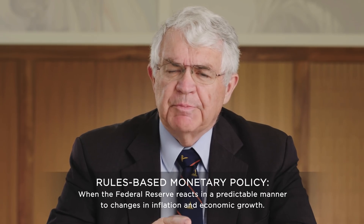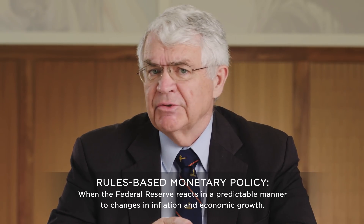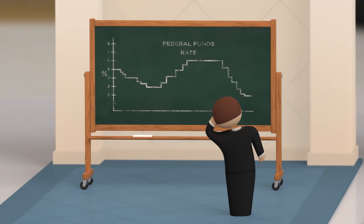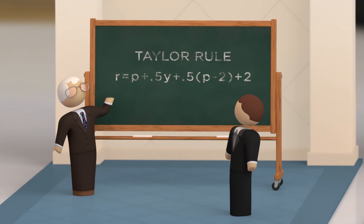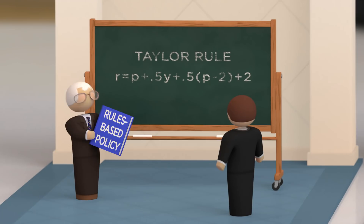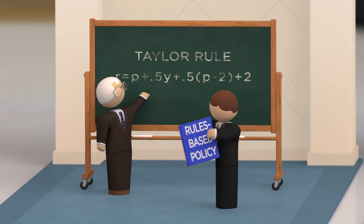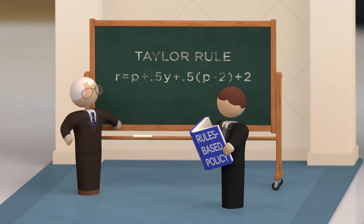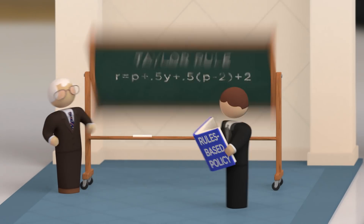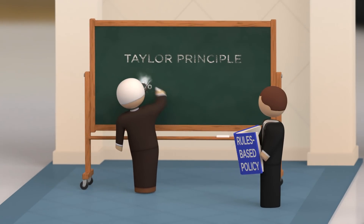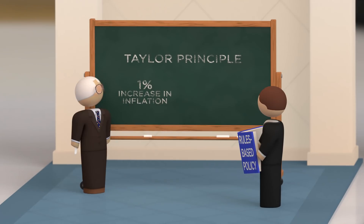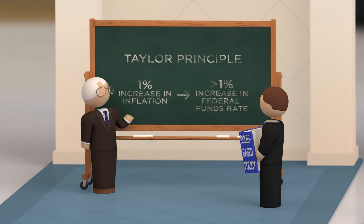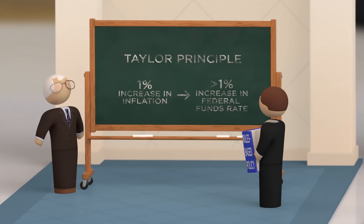Under a rules-based policy, the Federal Reserve reacts to changes in the economy in a predictable manner. An example is the Taylor Rule, which is a formula that central bankers use to adjust their interest rate according to changes in economic output and inflation. One feature, often called the Taylor principle, is that if inflation rises, the central bank will raise the interest rate more than that increase in inflation.